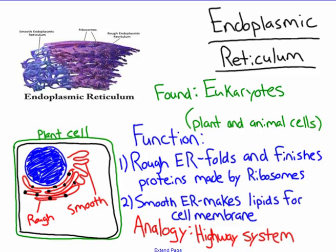The ER is only found in eukaryotes — plants and animal cells. The analogy I'm going to use is a highway system, because it allows lipids and proteins to transport all throughout the cell. A highway system is a good way to think of the ER.